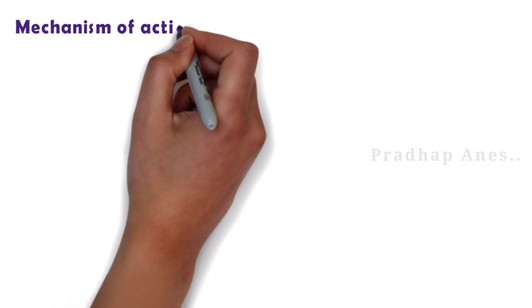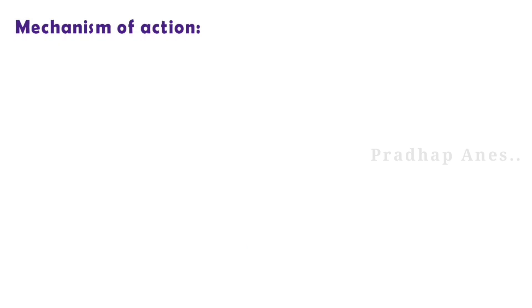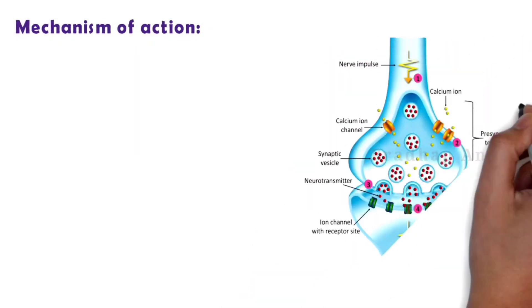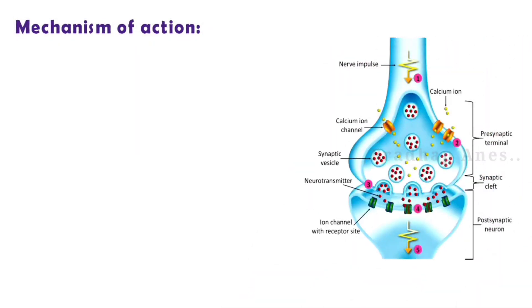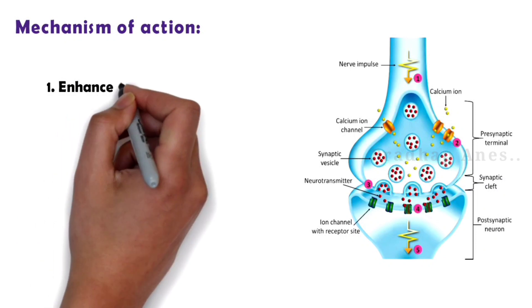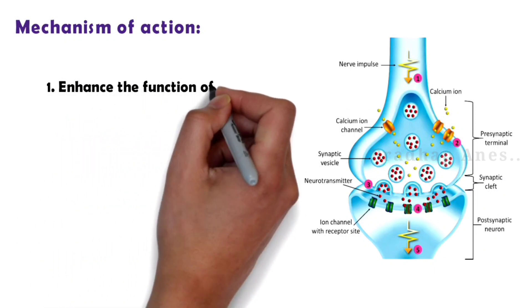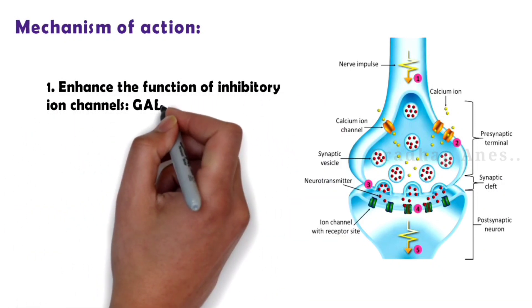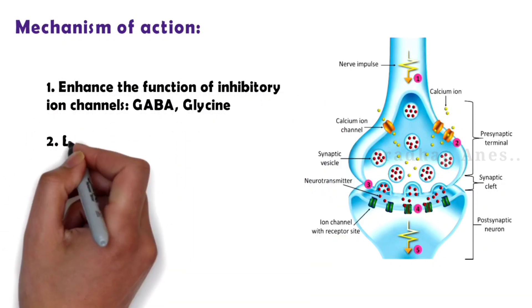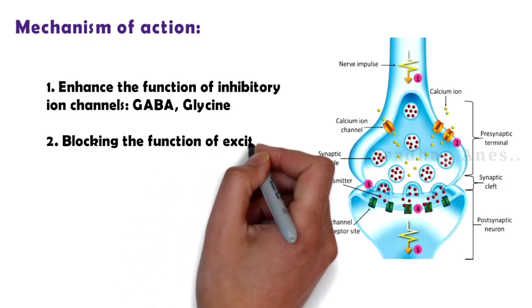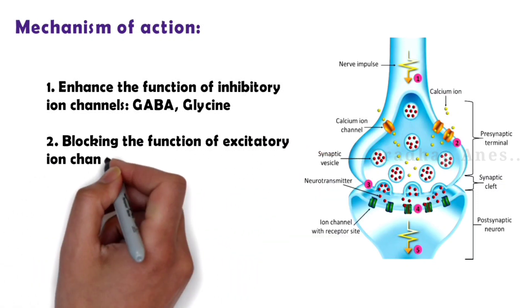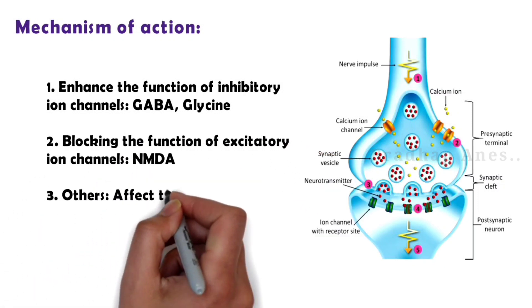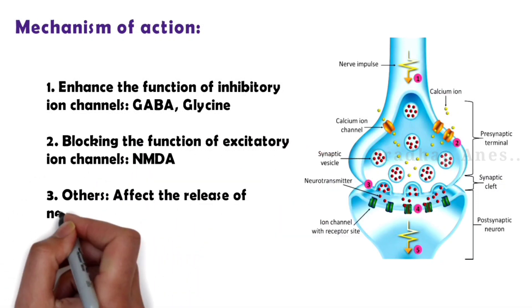Mechanism of action: they enhance the function of inhibitory ion channels such as GABA and glycine, while blocking the function of excitatory ion channels such as NMDA. They also affect the release of neurotransmitters.